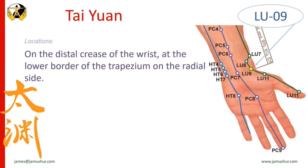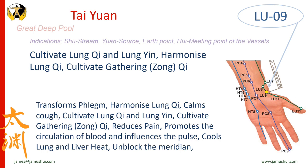Taiyuan is located on the distal crease of the wrist at the lower border of the trapezium on the radial side. In Chinese medicine there are two sources of post-heaven qi energy production: the food we eat and the air we breathe. Taiyuan is the single most important point on the lung channel to tonify lung qi or yin — the two principal patterns of lung deficiency. Taiyuan is the shu-stream, yuan-source, and earth point of the lung channel, recommended to treat all zang disharmony. It is also the hui meeting point of the vessels. In combination with Stomach 36, using the principle of cultivating the earth to generate metal, it strongly tonifies lung qi.